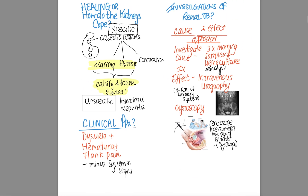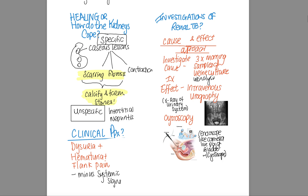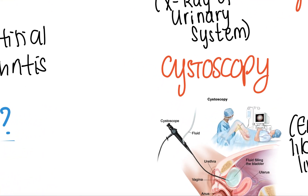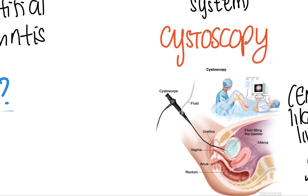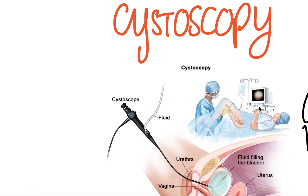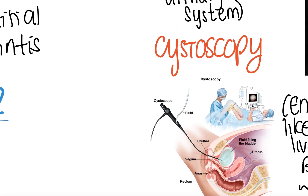If we would rather investigate the effect on the kidneys, we can do an X-ray of the urinary system, which is known as intravenous urography. Or we can pass a cystoscope into the lower genitourinary tract through the urethra, get an image of the whole tract — that is known as cystoscopy.